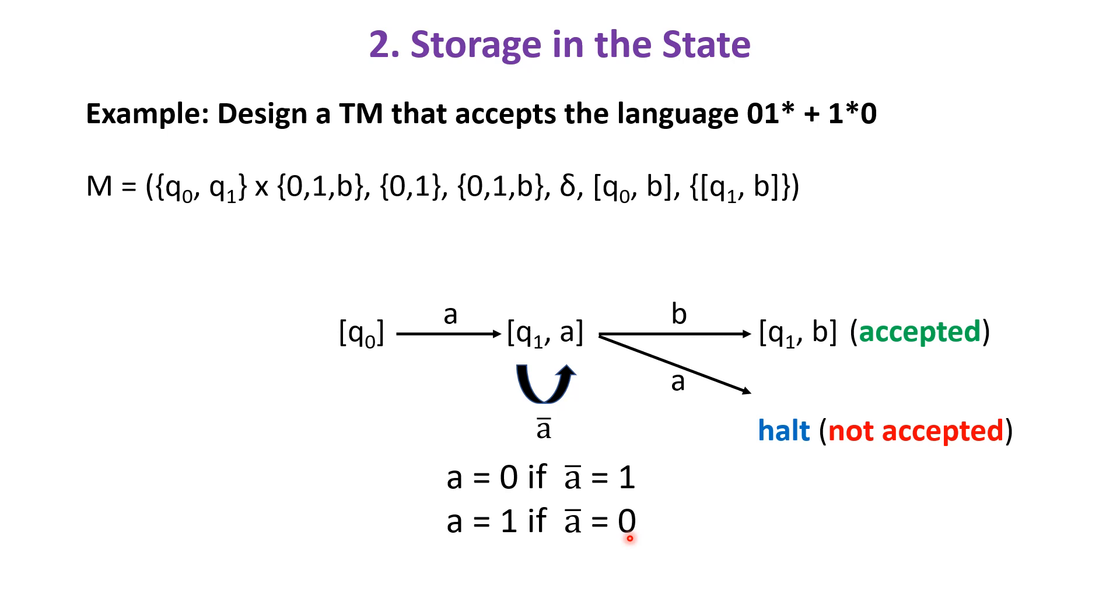If the next symbol is a', that is a = 0 if a' = 1 and a = 1 if a' = 0, then M moves without changing the state and this step is repeated until M reaches [q1, B] or it halts.